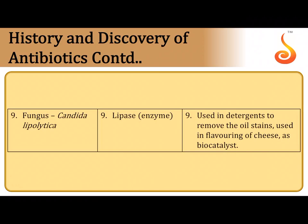The fungus Candida lipolytica is a source of an important enzyme called lipase, routinely employed in detergents to help remove oil stains from clothes and vessels. Fruit juices from the market are very clear compared to homemade ones because they are treated with clearing agents like pectinases and cellulases. These are some enzymes of industrial importance provided by microorganisms.